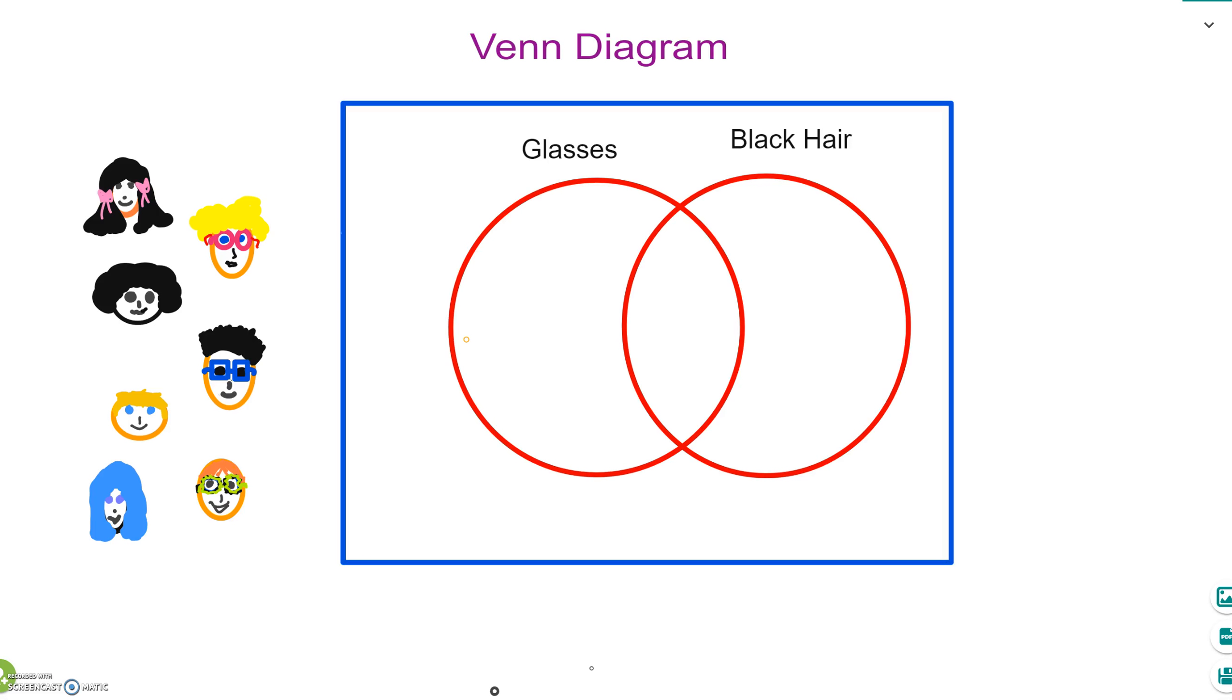A Venn diagram is used to sort out data. Here we have a Venn diagram with two sets. One set is for those students who wear glasses, and the other set is for those who have black hair.